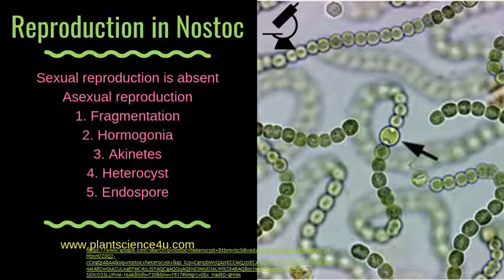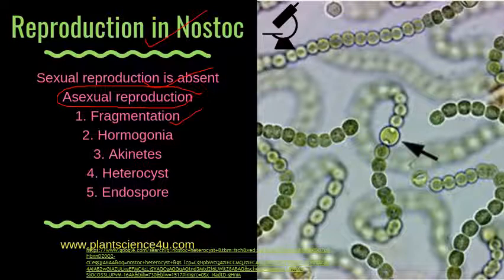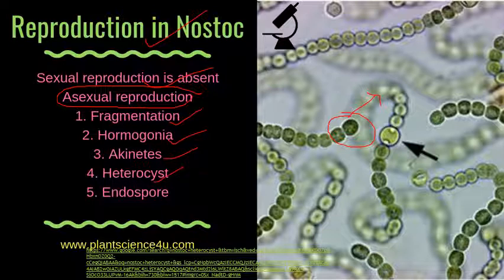Next is reproduction in Nostoc. In most blue-green algae, sexual reproduction is absent, so Nostoc reproduces only by asexual means. The main methods of reproduction are: fragmentation, where the filament gets broken down into small fragments and each fragment can form a new filament; hormogonia, which are short filaments of two to three cells; akinetes, which are thick-walled cells acting as food reservoirs; heterocysts, which are large intercalary or terminal structures helping in nitrogen fixation and reproduction; and endospores.